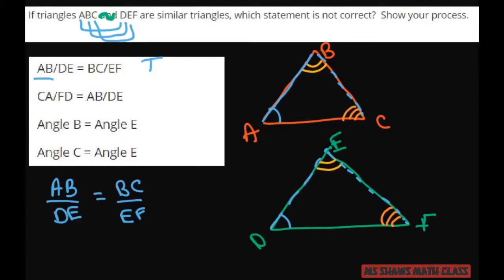And then we have CA. So let's use yellow. CA to FD as AB to DE. That would be true. They all are on the same line. So that's true.